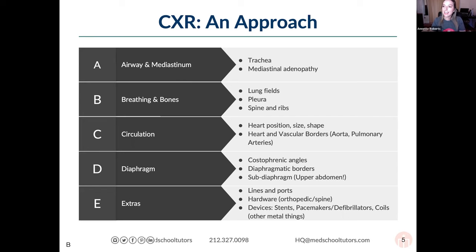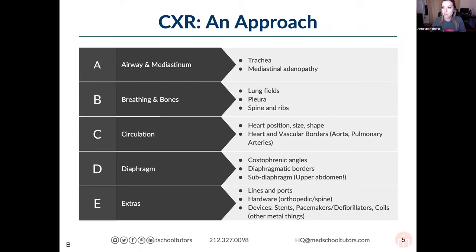B is for breathing — look at the diaphragm: is it flat or round, are both sides equal and symmetrical? For bones, look at the different ribs and count them. You can get an idea if the lungs are hyperinflated by how many ribs you can count. Also check for any possible fractures or broken bones around the ribs or chest wall.